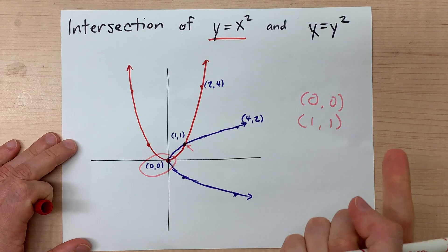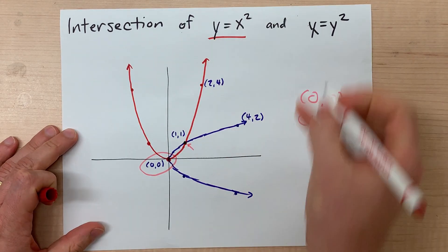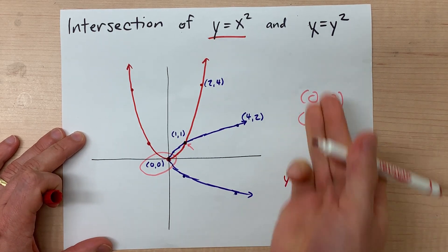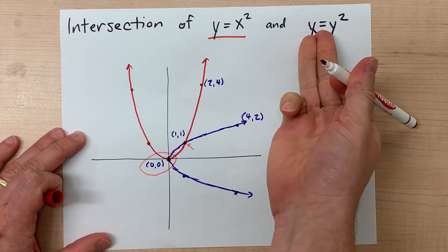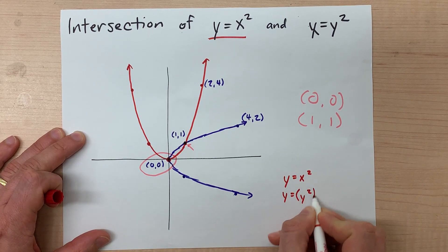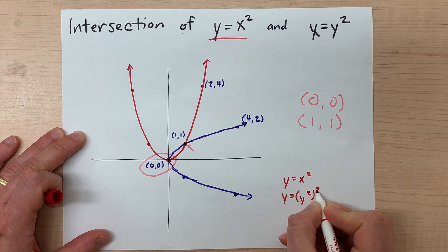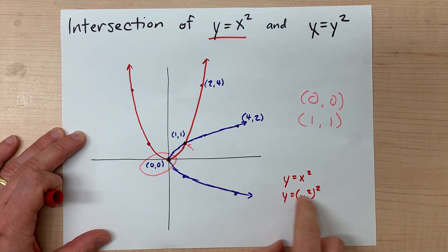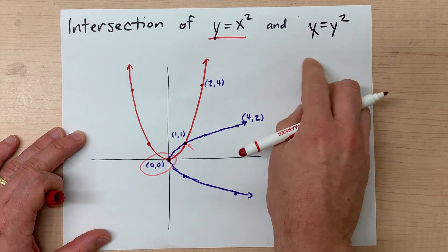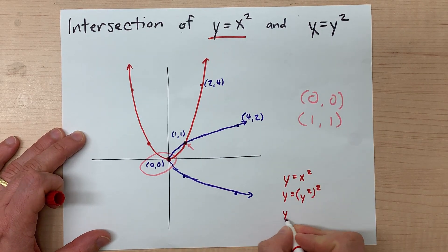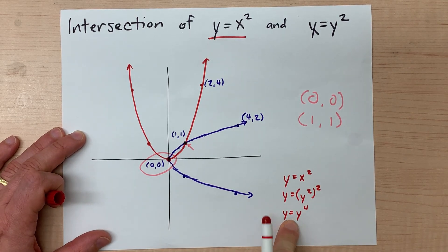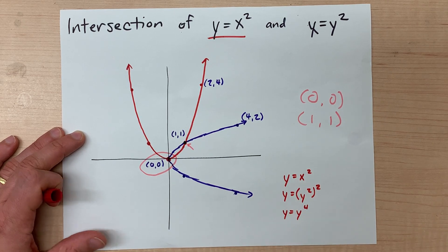One other option for you is substitution. Now we know y = x². And perhaps you can say, well, x itself is y². So I'm going to replace x with y². But don't forget the extra squared here. This is y = x². And I'm allowed to make that substitution because this equation says x = y². That means we're looking for any of the points where the y value is the same number raised to the power of 4.